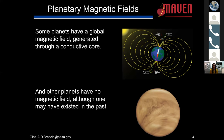Some planets have global magnetic fields generated through a conductive core. As you see on the right, this is an artist's rendition of Earth and its global dipolar magnetic field surrounding the entire planet. Throughout our solar system, several planets have a global magnetic field — including Mercury, Earth, Jupiter, Saturn, Uranus, and Neptune. But we also have planets without a magnetic field; one may have existed in the past but they're no longer present today. A perfect example is Venus. So we have two very different circumstances: a global magnetic field or no magnetic field.